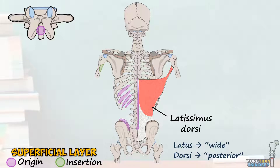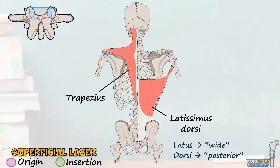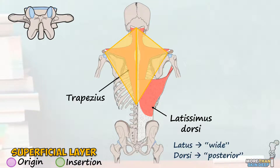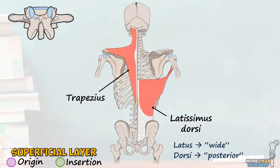The function of latissimus dorsi is to extend, adduct, and internally rotate the humerus at the shoulder joint — think of a person doing a pull-up; this is exactly the movement that latissimus dorsi facilitates. The second large muscle of the superficial back is the trapezius. The two trapezius muscles are triangular in shape, with their longest attachment running down the midline of the back, and when considered together they form a recognizable trapezium shape, hence their name. The trapezius muscle originates from the superior nuchal line and external occipital protuberance of the skull, the nuchal ligament, and the spinous processes of C7 all the way down to T12.